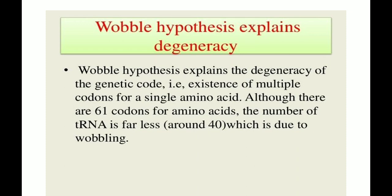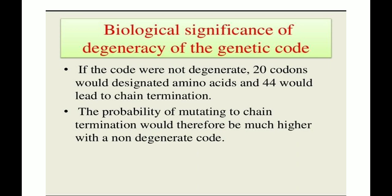Although there are 61 codons for amino acids, the number of tRNA molecules is far less than 40, which is due to wobble. Regarding the biological significance of degeneracy: if the code were not degenerate, only 20 codons would be designated for amino acids and 44 could lead to chain termination. The probability of mutating to chain termination would therefore be much higher with a non-degenerate code.